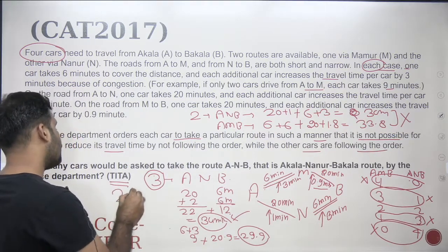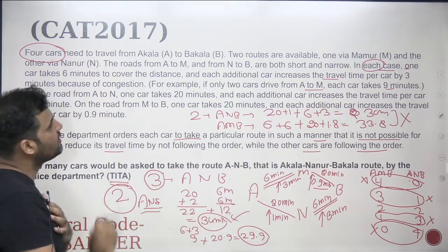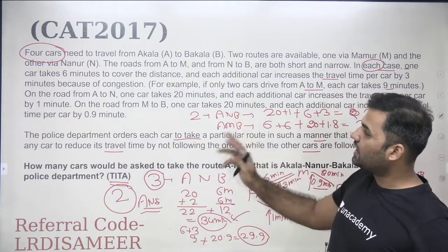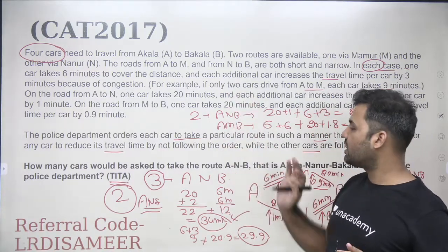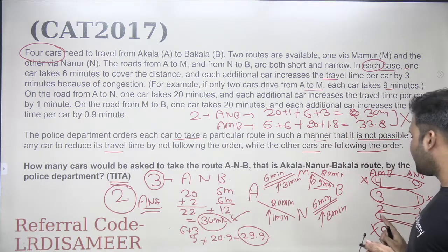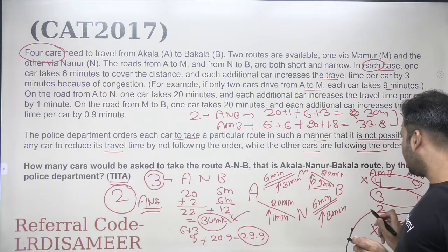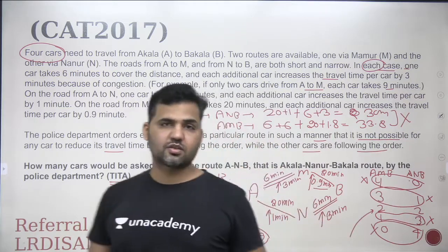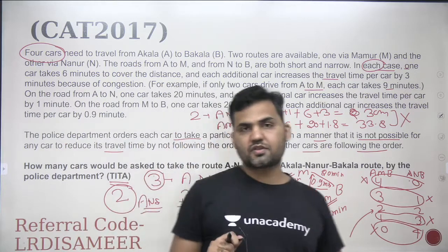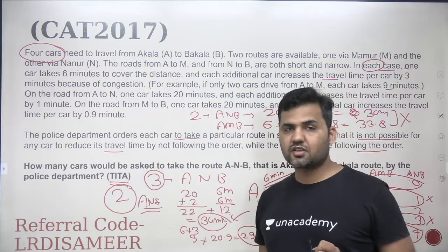Therefore, the only valid case is two cars traveling via A-N-B and two via A-M-B. The police must have ordered two cars to use the A-Nanur-Bakala route. The answer to the question is two. This is a straightforward CAT 2017 question — you just need to understand the congestion time increase rule and systematically eliminate the cases.